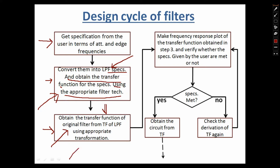At this step, I have the transfer function of my original filter. Then I will make the frequency response of this filter using the transfer function obtained in step 3 in MATLAB. I will make the magnitude plot and the phase plot, and I will try to see whether this frequency response satisfactorily describes the specification given by the user, with the help of graphs drawn in MATLAB. If the specifications are met by the frequency response, then I obtain the circuit from the transfer function.